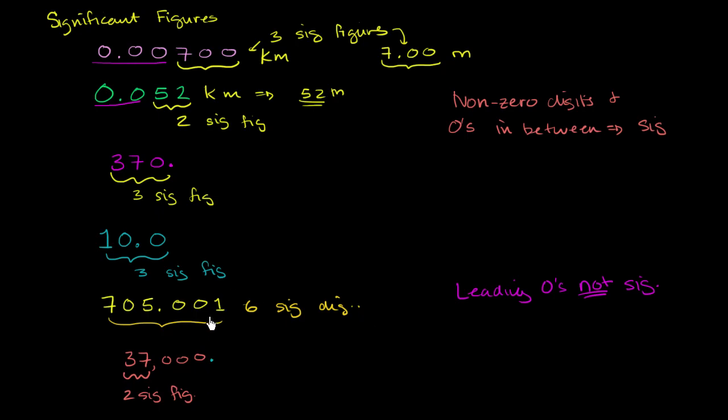And so the last question, all you have left, you only have non-zero digits and zeros in between. You could have some leading zeros, which you've already said are not significant. And so the only thing left that you have to figure out is what do you do with the trailing zeros, the zeros behind the last non-zero, or to the right of the last non-zero digit.